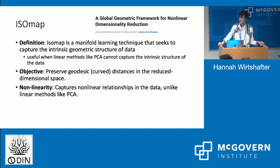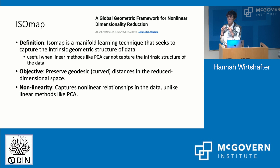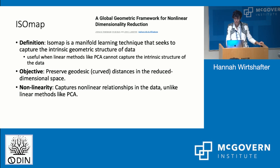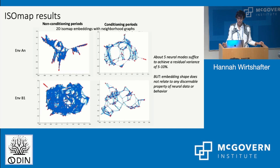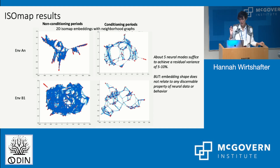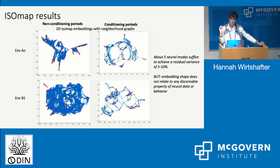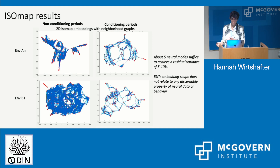I then moved to isomap, which is another nonlinear method that tries to maintain the geodesic dimensionality of the data. The classic example is a Swiss roll, where two points might look close together on a spiral but the actual distances don't recapitulate the structure correctly. This was probably the least informative method for my data — the isomap results just kind of ended up looking like nothing. What was interesting is that I needed very few neural modes to get a really small residual variance, far fewer than PCA. But it was completely uninterpretable — no obvious connections between different parts of the graphs, different days didn't look more similar than others, and I couldn't relate the embedding shape to anything happening with the animal, the behavior, or the neural data.